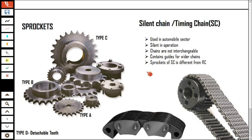The other type of chain is the silent chain. This type is often called a timing chain because of its unique shape and design. It operates more quietly than a roller chain when the individual links contact the sprocket teeth — similar to two gears meshing. A familiar application is in the automobile industry.